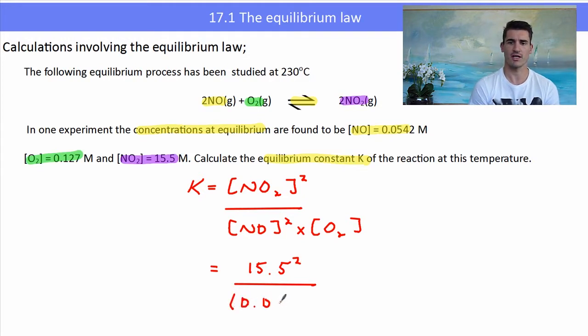Here we are writing the equilibrium expression, subbing in the values, and then calculating our K value directly. Our K value equals 6.44 × 10⁵ to three significant figures, and the units would be M⁻¹.